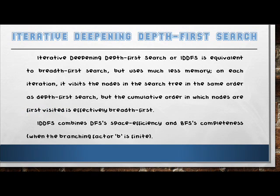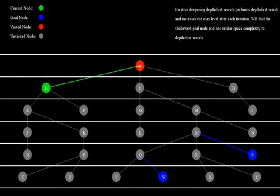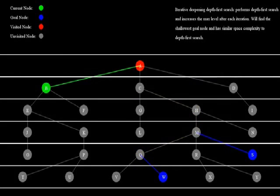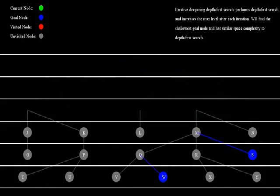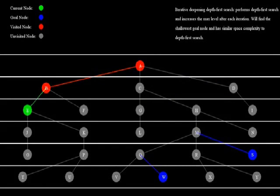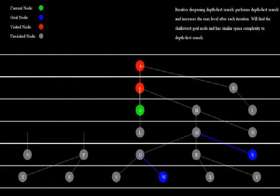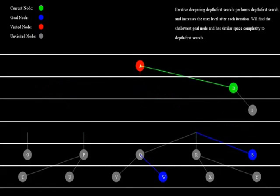Iterative Deepening Depth-First Search, or IDDFS, is equivalent to breadth-first search but uses much less memory. On each iteration, it visits nodes in the same order as depth-first search, but the cumulative order in which nodes are first visited is effectively breadth-first. IDDFS combines DFS space efficiency and BFS completeness. It checks level per level in trials, finding the best limit at which the goal can be met.